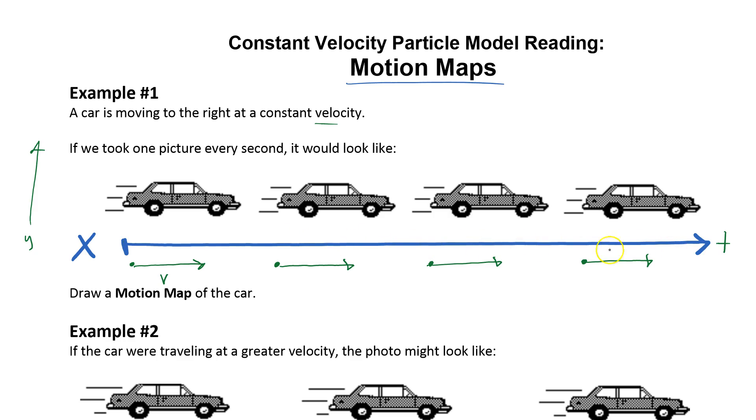So that's what the motion map would look like. The top one is your x-axis and this is the dots of where they are at each second and then the arrows.